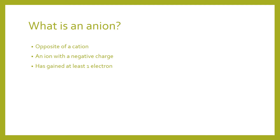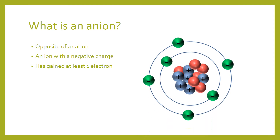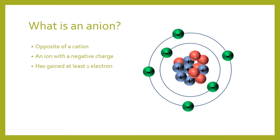An anion is the opposite of a cation — it's an ion with a negative charge, meaning it has gained at least one electron. If we add a negative, we would have seven negatives and six positives, giving it a charge of negative one.